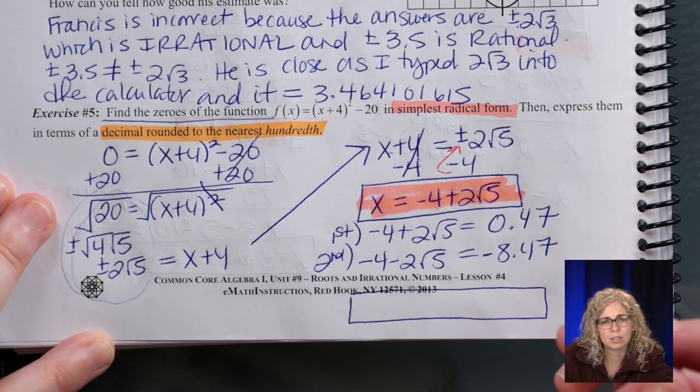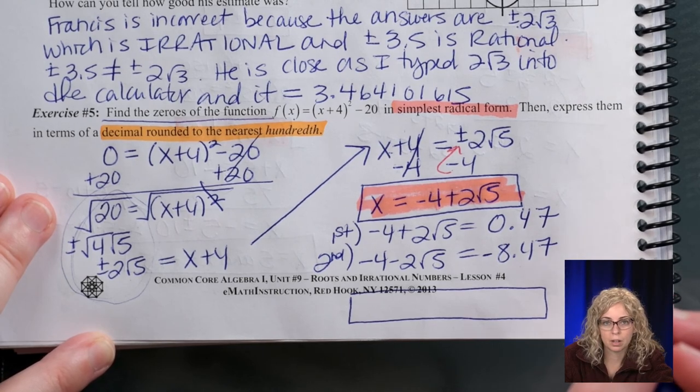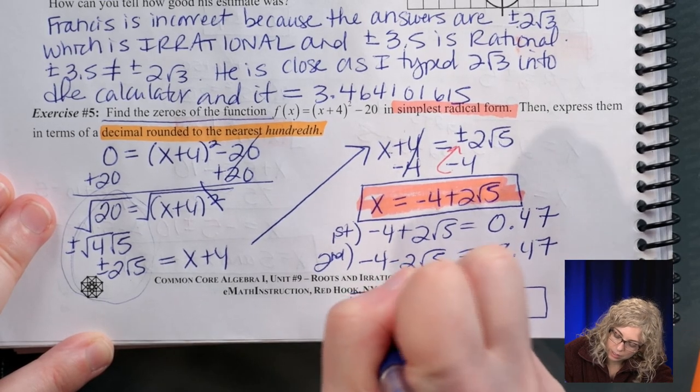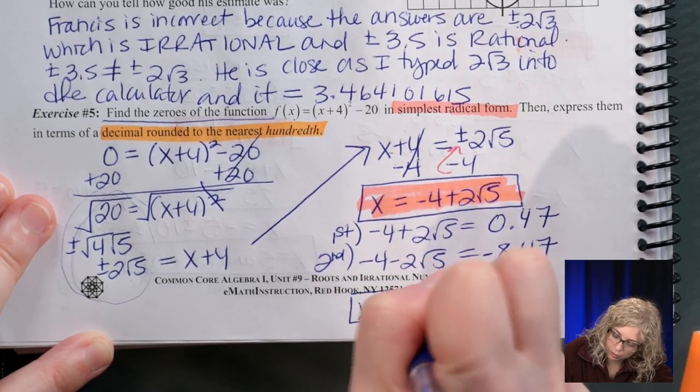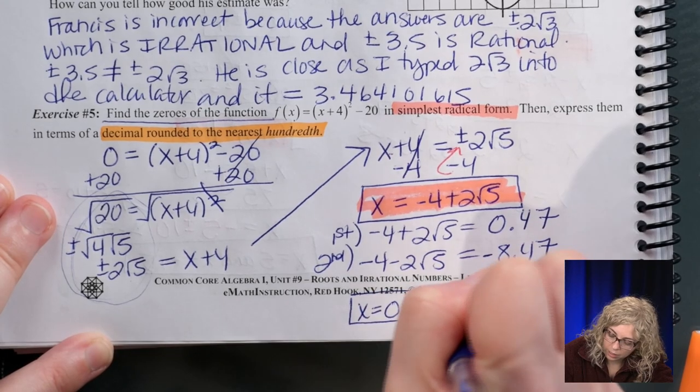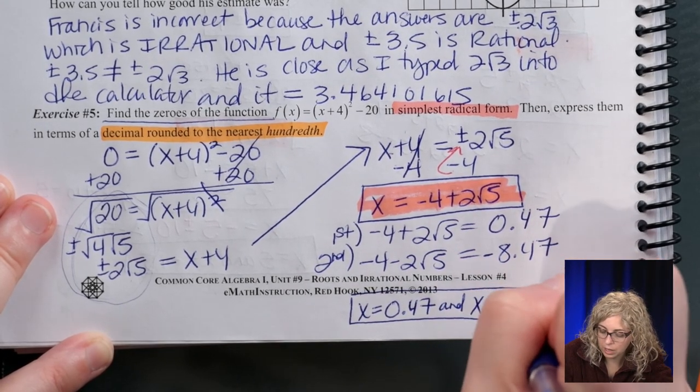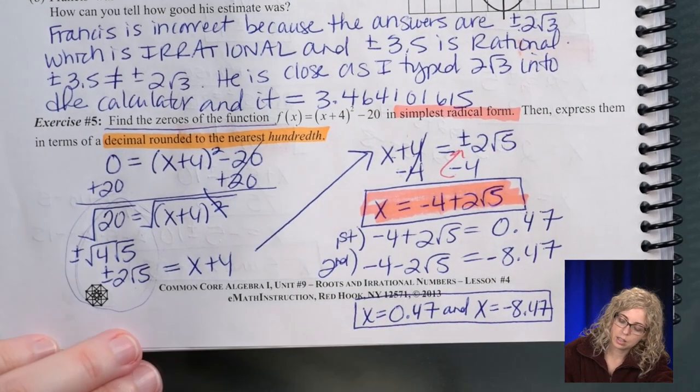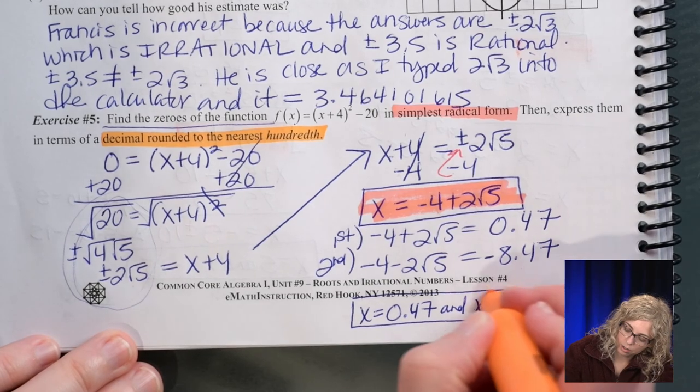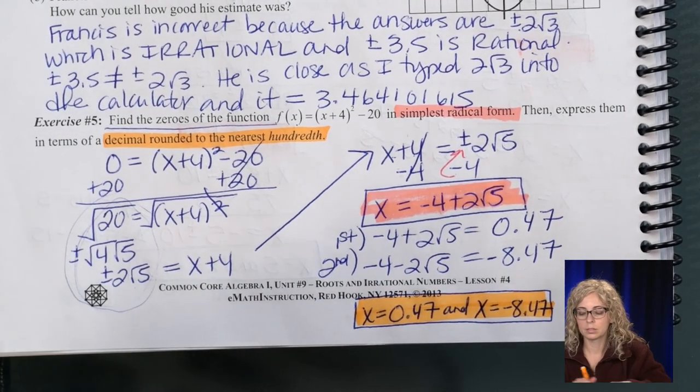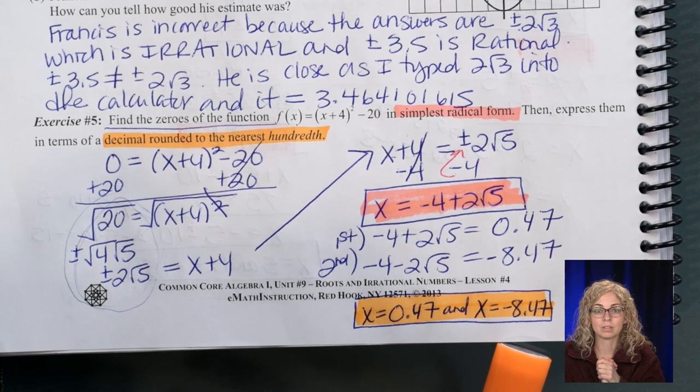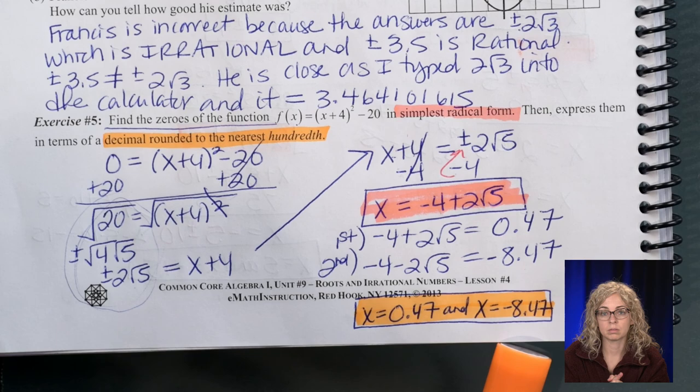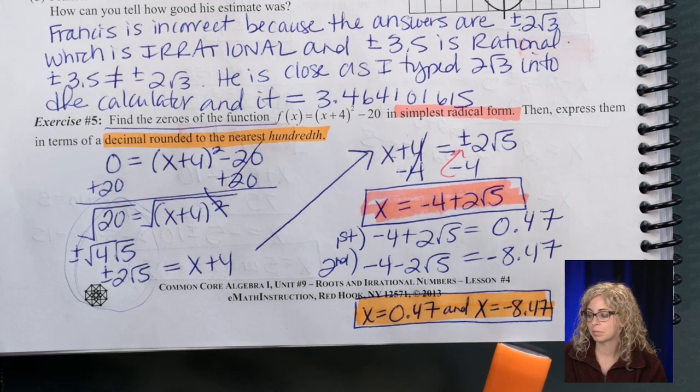Good thing this is my last video. Ah, I miss being in the classroom. All right. So, the first one. We have x equals 0.47. And, x equals negative 8.47. All right. That is rounded to the nearest hundredth. And, we're done. All right. Study. Because, remember, your quiz is on Friday. Take care.